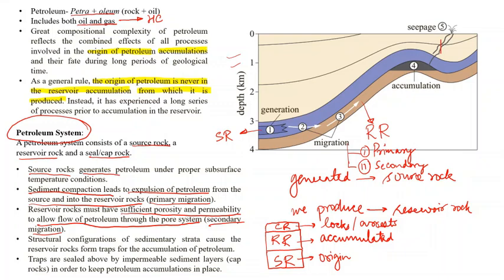Once pressure is put on the sediments of the source rock, they get compacted and release the petroleum, which enters the overlying reservoir rock. If the reservoir rock is non-porous or non-permeable, then neither primary migration nor secondary migration will occur. After that, the sedimentary strata structural configurations cause the reservoir rocks to form traps for accumulation of petroleum. You can see here number four — this is a fold, an anticline or an antiform.